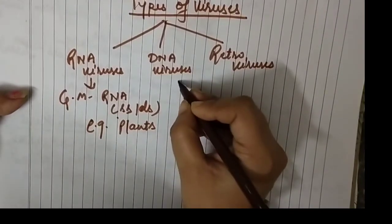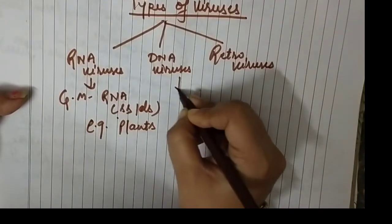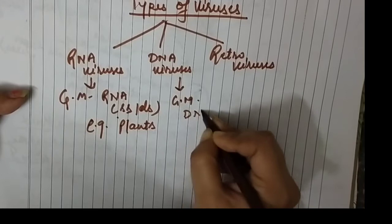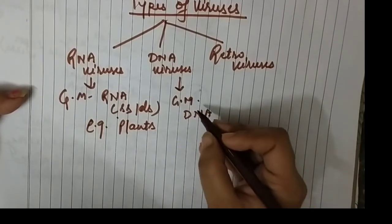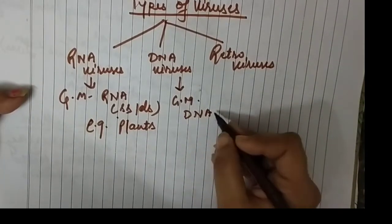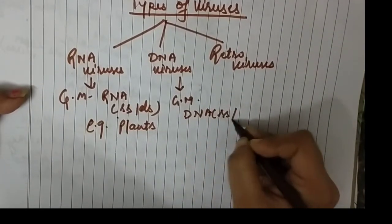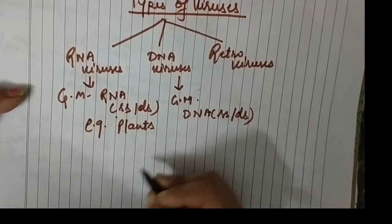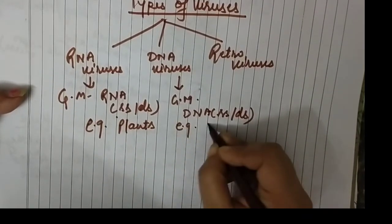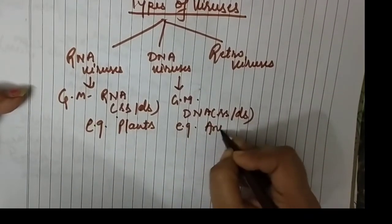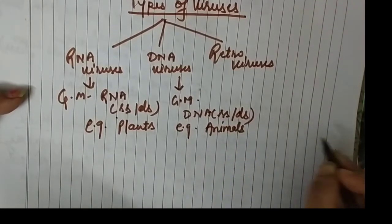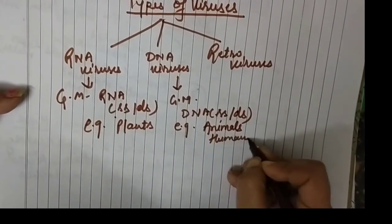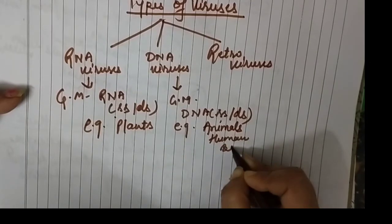In DNA viruses, the genetic material is DNA. It may also be single stranded or double stranded. Most of the time these are present in animals and human beings, infecting animals and humans, though there are also exceptions.